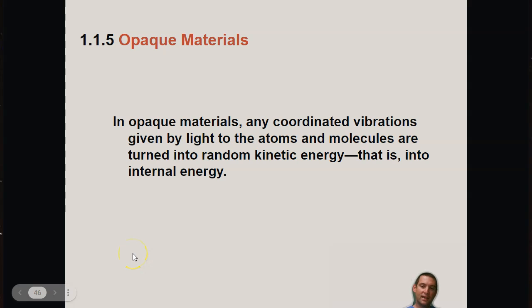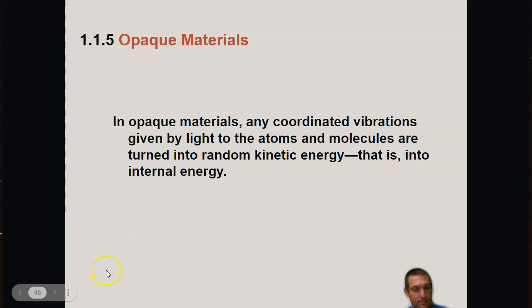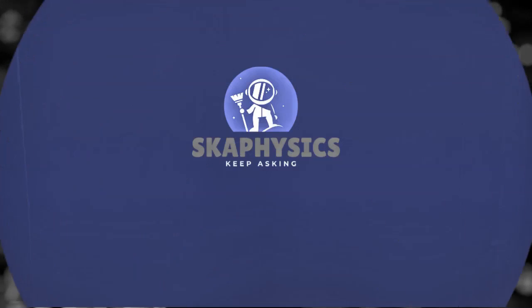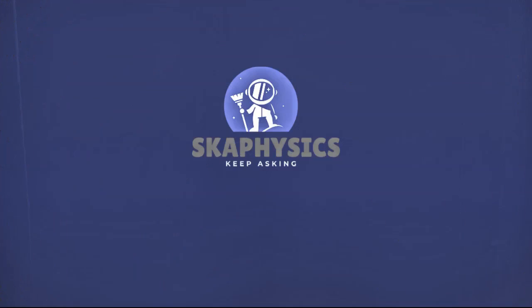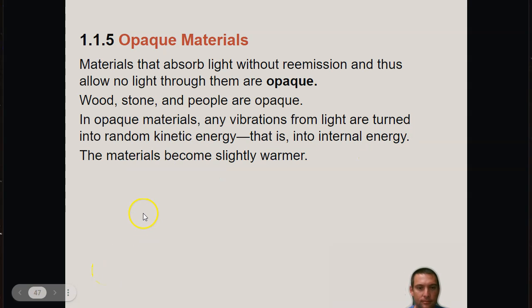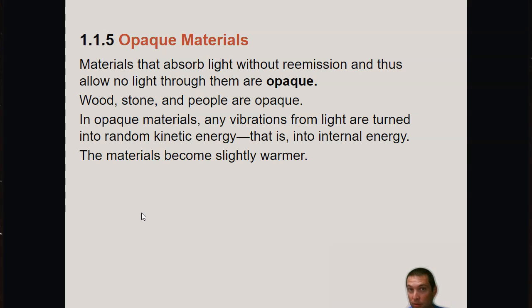In opaque materials, any coordinated vibrations given by light to the atoms and molecules are turned into random kinetic energy — that is, into internal energy. Materials that allow no light to go through them are called opaque. Wood, stone, and people are all opaque.